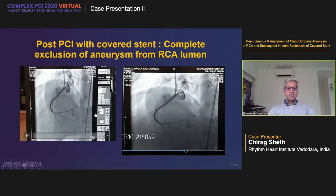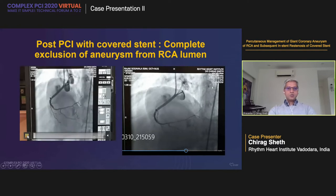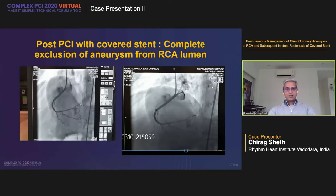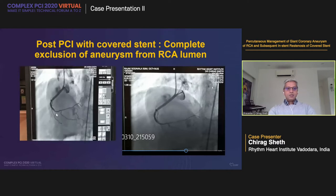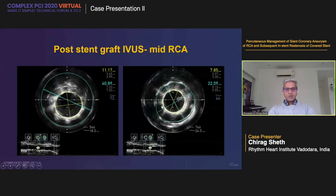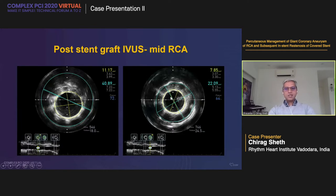The aneurysm was treated with two covered stents and the end result showed complete exclusion of the aneurysm from the RCA lumen on table, with good flow — procedure was successful. Post-PCI OCT showed a minimal lumen area of about 10.93 mm² in the proximal RCA and about 11 mm² in the mid-RCA. At the area of overlap of the two covered stents, areas were about 7.45 mm², which was expected. Except for this focal area of lower minimal luminal dimensions, the rest of the result was exceedingly good.